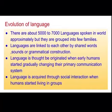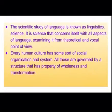The evolution of language must have been a long process. There are about 5,000 to 7,000 languages spoken in the world today, but they are grouped into few families. Languages are linked to each other by shared words, sounds or grammatical constructions. The shared linguistic family does not imply any racial link. Language is thought to have originated when early humans started gradually changing their communication system.